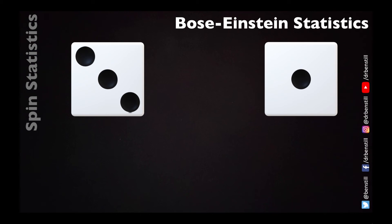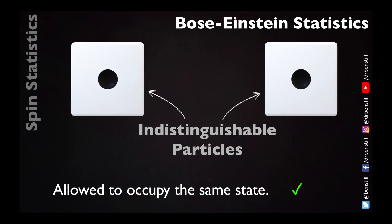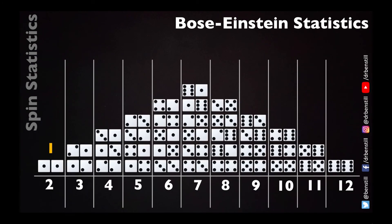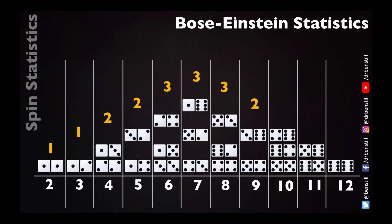Now let's look at boson dice that obey Bose-Einstein statistics. The two dice are indistinguishable but allowed to occupy the same state, meaning both may show the same number. There is still one way to get two. But because the dice are indistinguishable, the two ways of getting three become one. Similarly we lose one way of getting four, leaving two. We find two ways of getting five, three ways for six, three for seven, three for eight, two for nine, two for ten, one for eleven, and one for twelve.